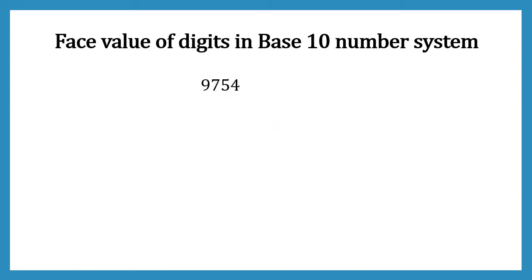Let's look at another example to understand face value and place value more. This time, I will start from right to left. For 4, we will have a face value as 4. For 5, we will have a face value as 5. For 7, it will be 7, and for 9, it will be 9. Remember, face value is nothing but the digit itself.